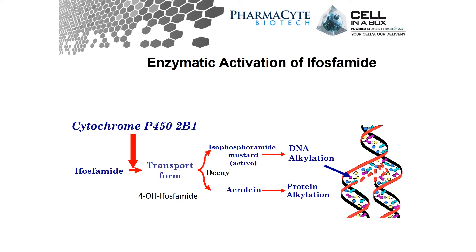Why are we working with a cytochrome P450 enzyme? This enzyme is very important in the conversion of chemotherapeutic agents already being used in the clinic for many years, like ifosfamide, cyclophosphamide, and maphosphamide. This enzyme converts these non-toxic prodrugs — these chemotherapeutics — into an intermediate form; in the case of ifosfamide, the 4-hydroxy form. This is a transport form — it can get out of cells and back into other cells. It would be produced in our encapsulated cells, get out, and get into the tumour cell.